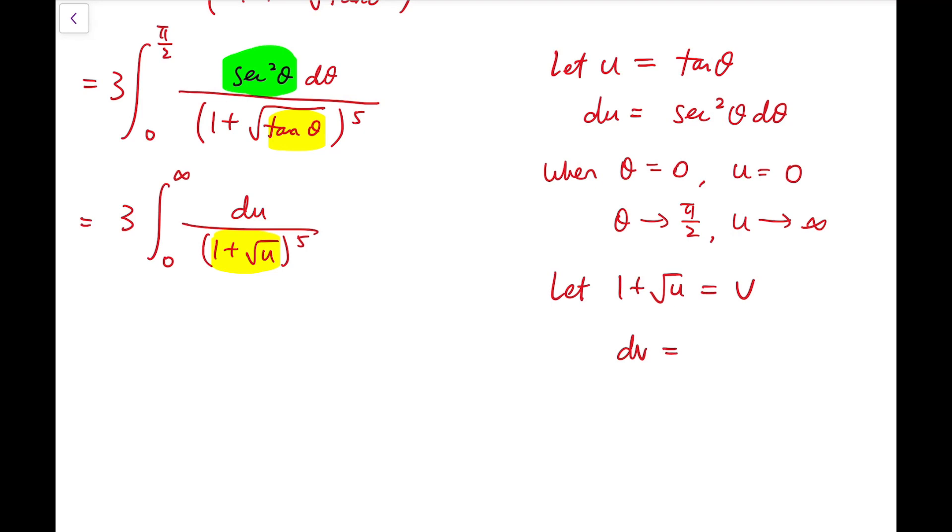And then our new differential dv is actually equal to 1/(2√u) times du. Now notice that I can rewrite √u in terms of v, so that dv equals 1/(2(v - 1)) times du. And so our old differential du becomes 2(v - 1) dv.